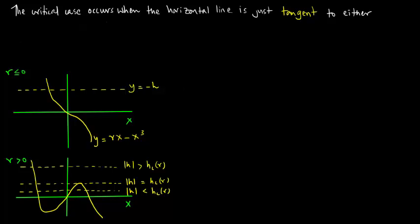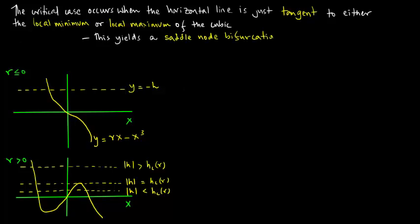The critical case actually occurs when the horizontal line is just tangent to either the local minimum or the local maximum of the cubic. This yields a saddle node bifurcation.